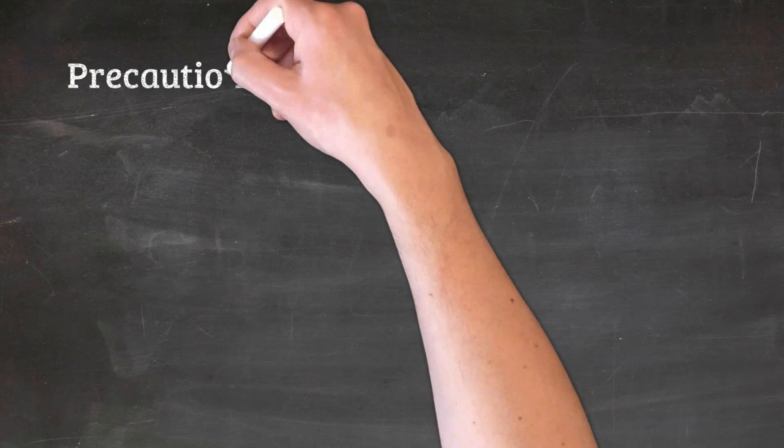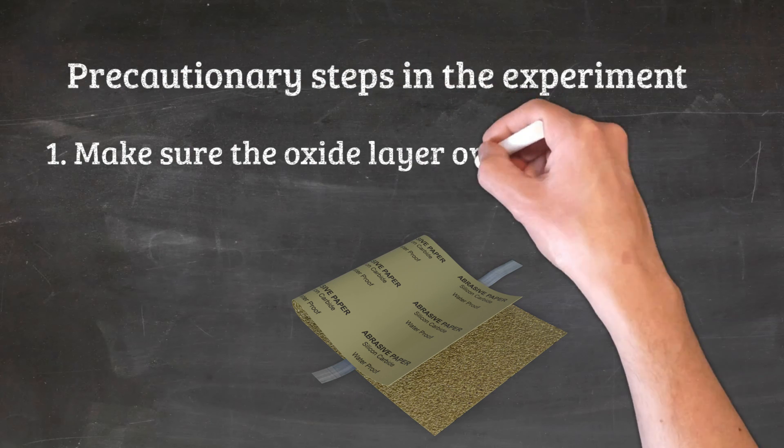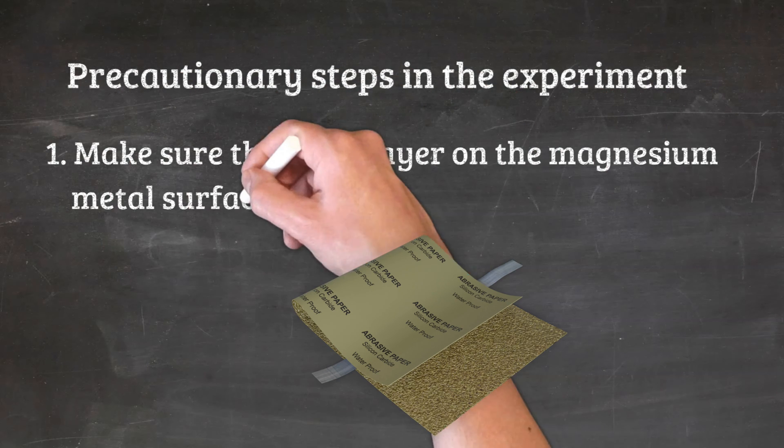Precautionary steps when conducting the experiment. 1. Make sure the oxide layer on the magnesium metal surface is completely cleaned.